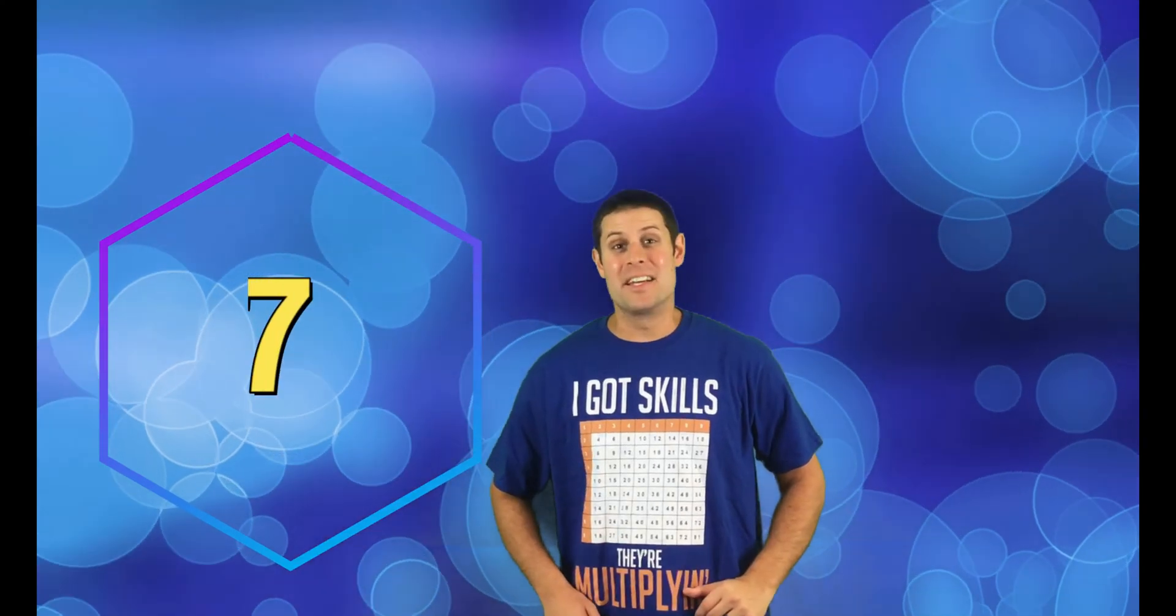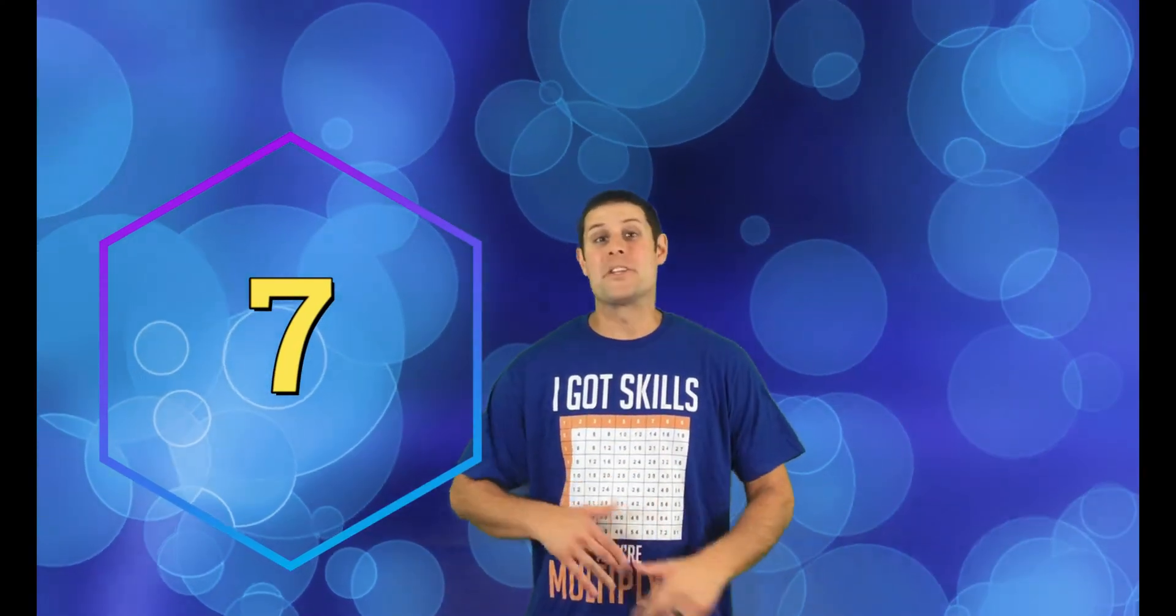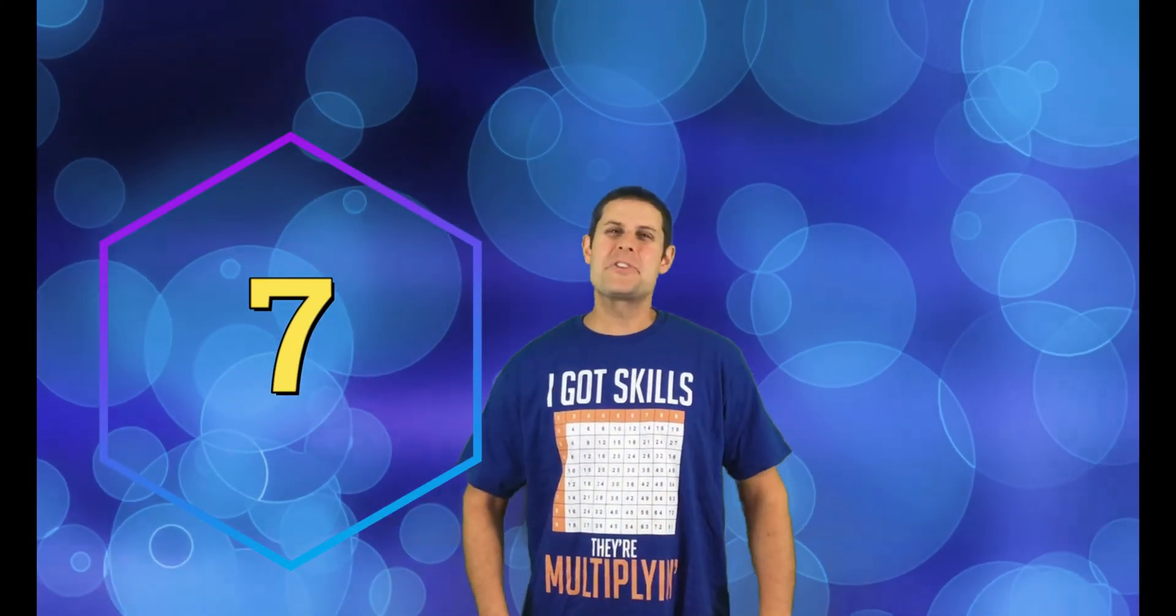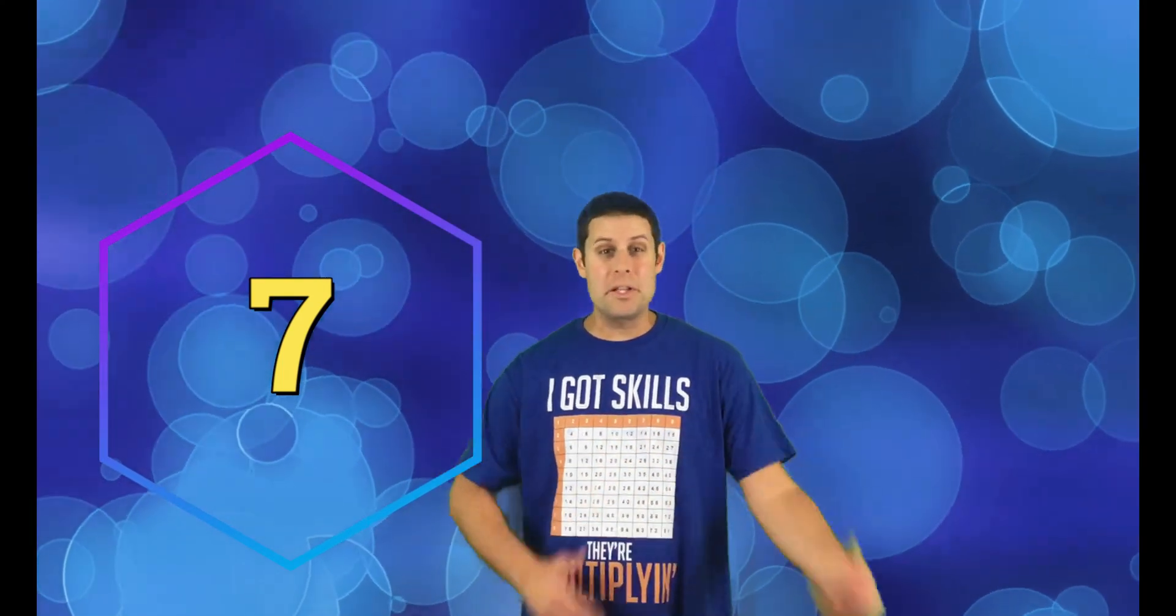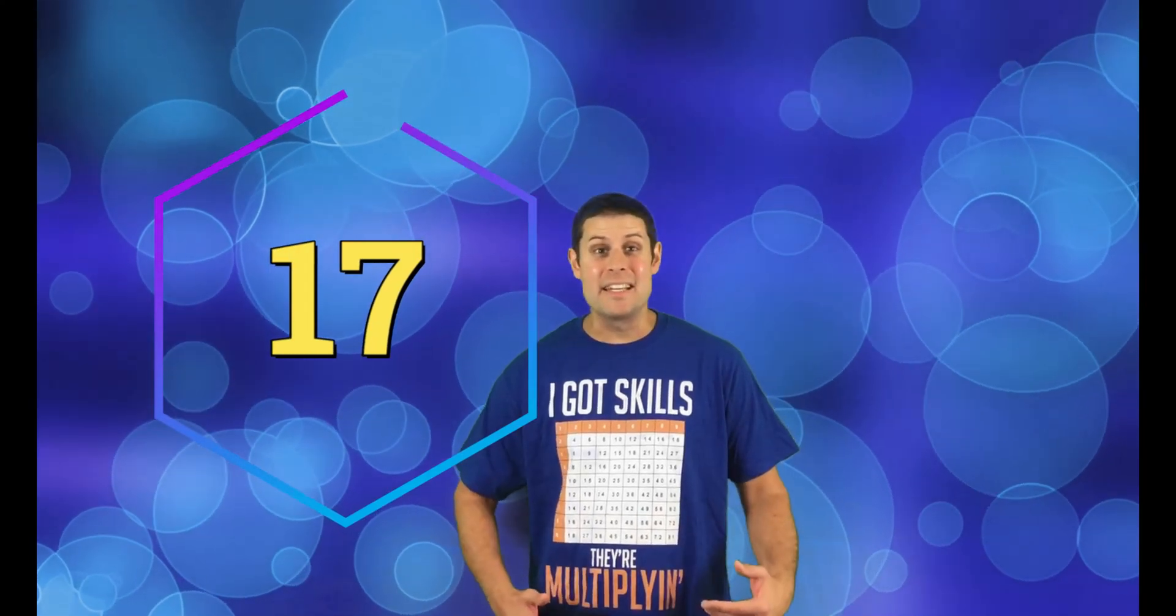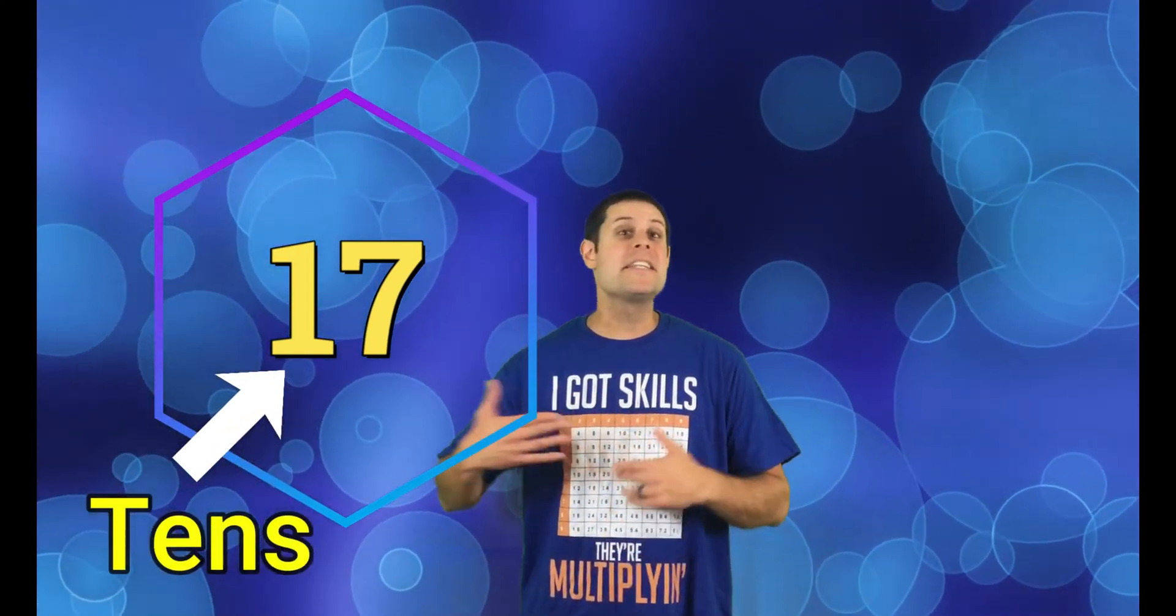Let's look at the digit 7. Now 7 is a digit but it's also a number. It's a very small number because it only has a ones place. However, if we bump it up to 17 we see that we're now going into the tens column.